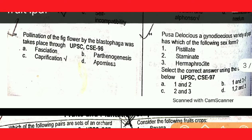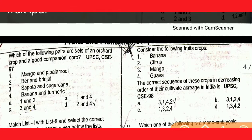Next question: Pusa Delicious and Pusa Nanha are varieties of papaya. They have pistillate and hermaphrodite plants. Options 1 and 3 are correct — pistillate and hermaphrodite.